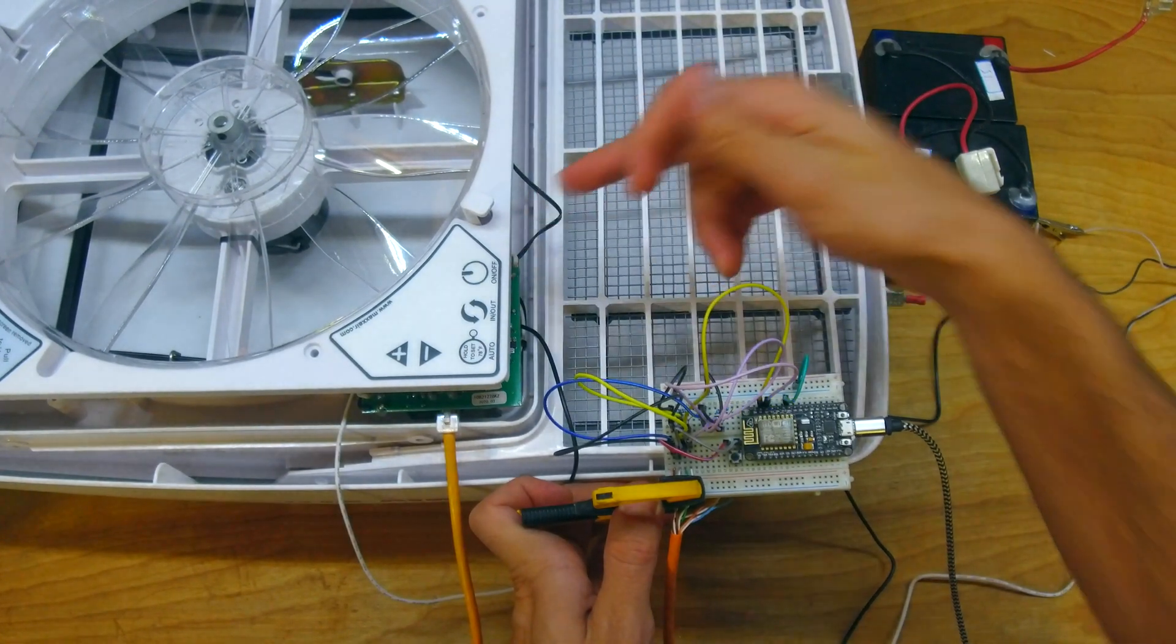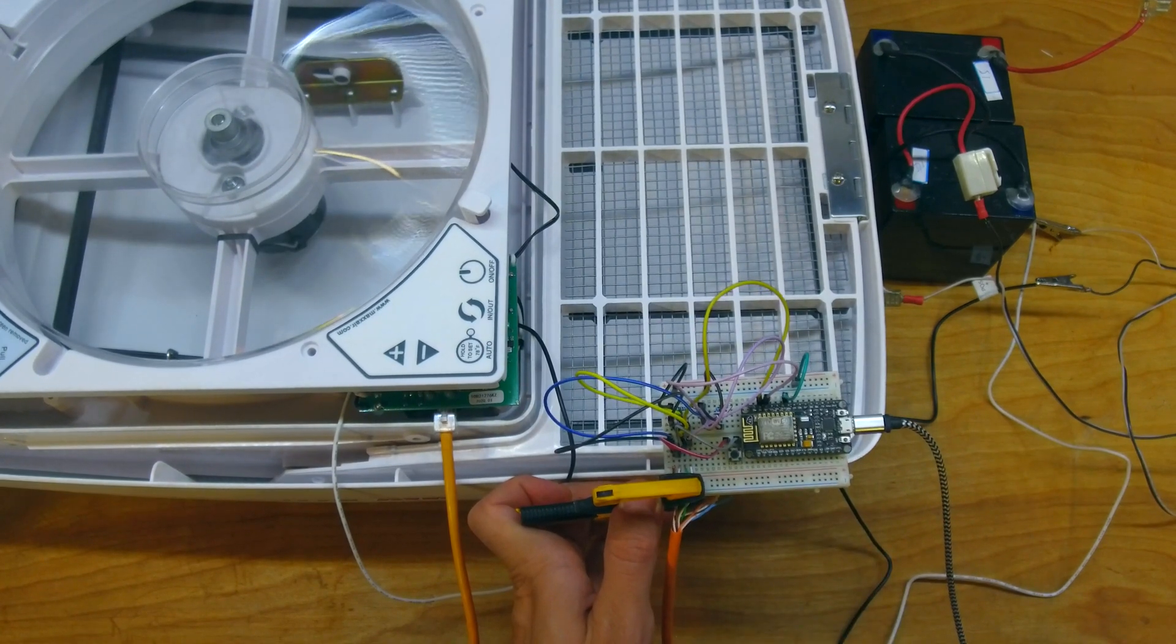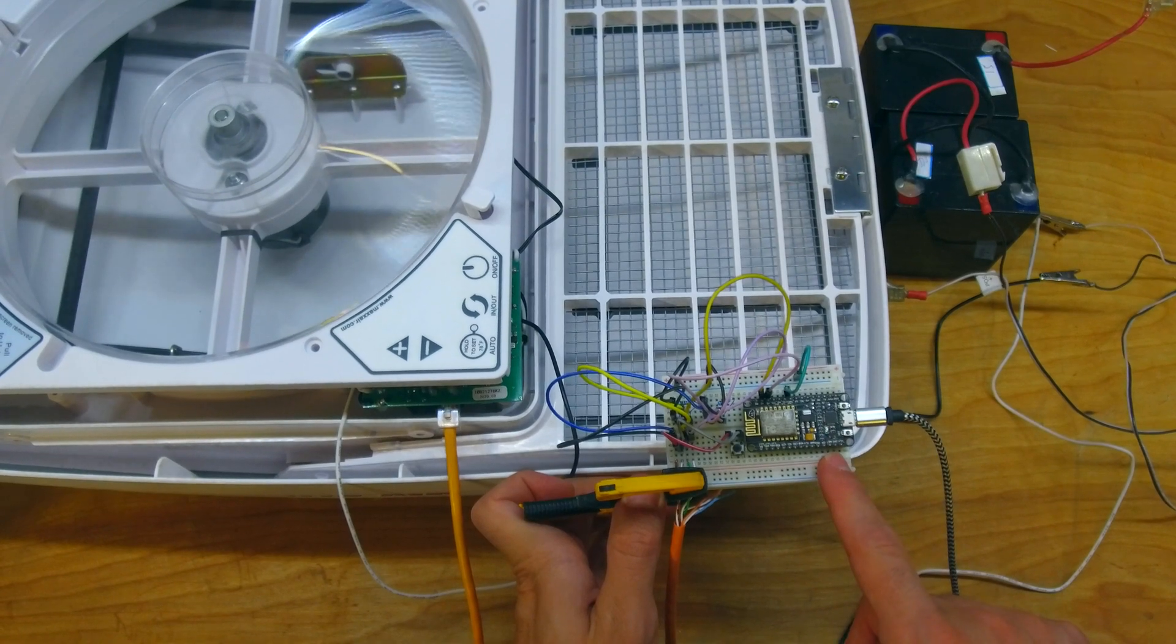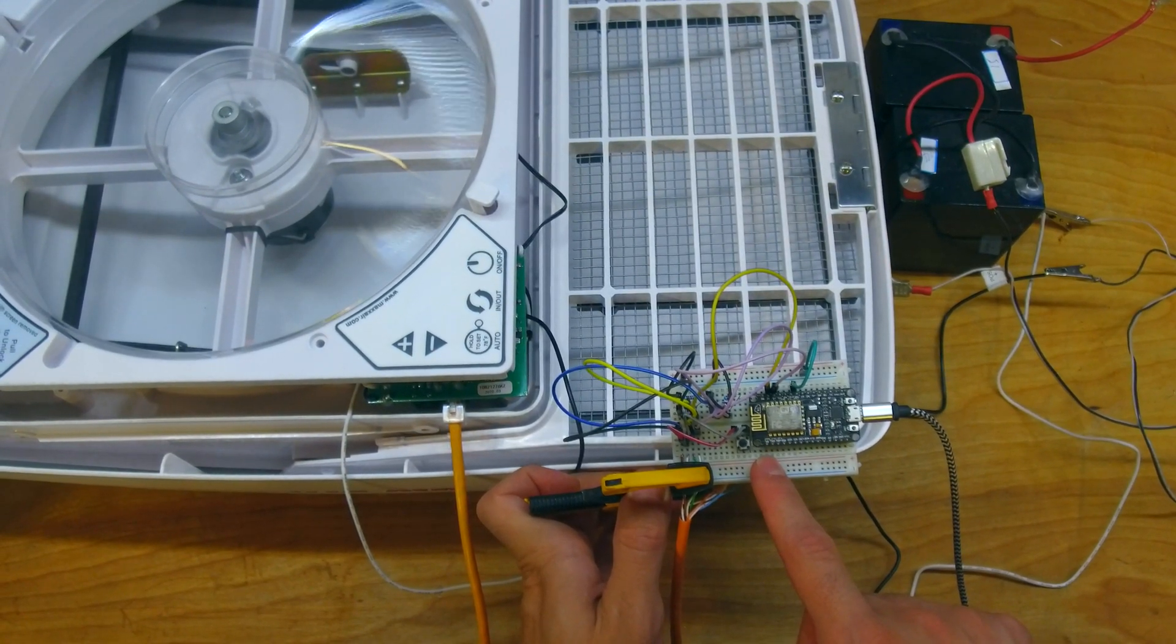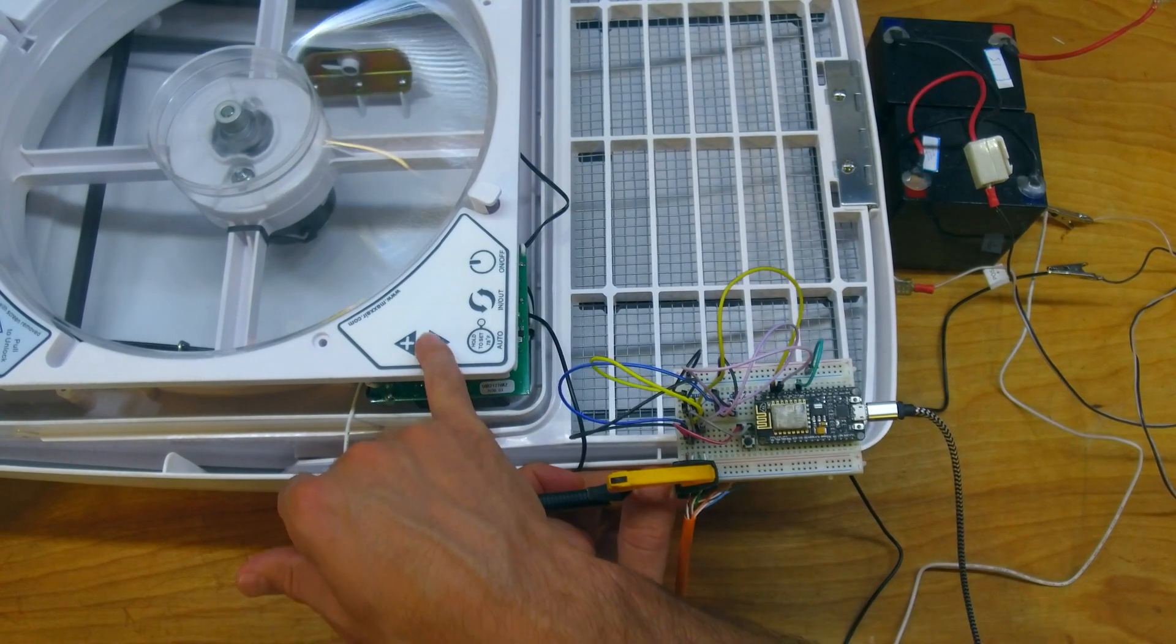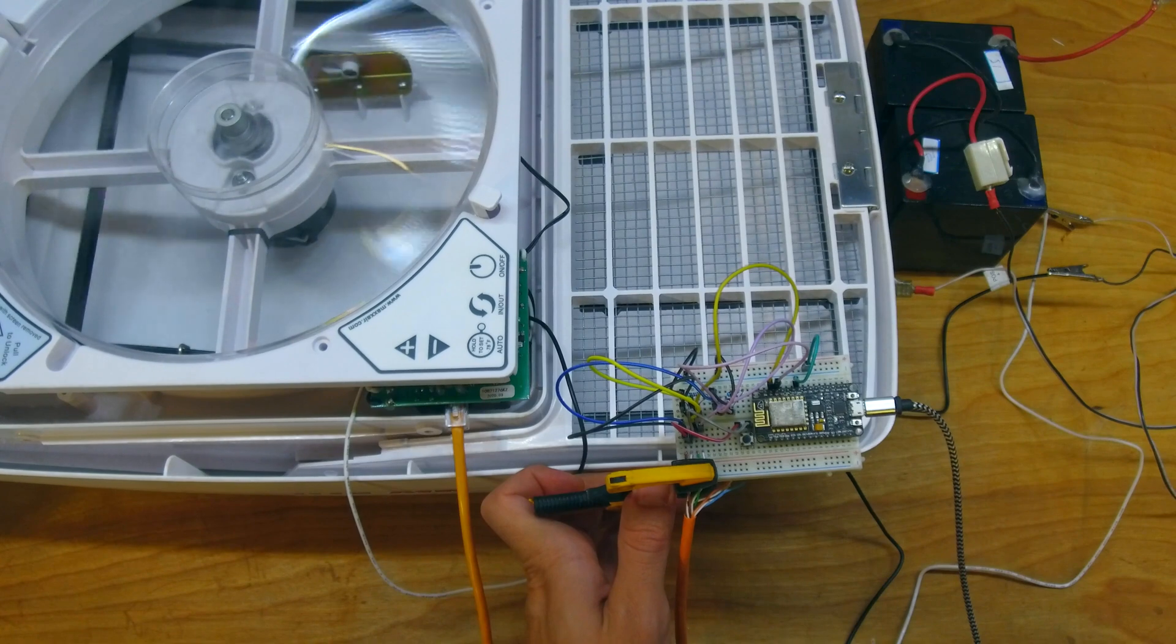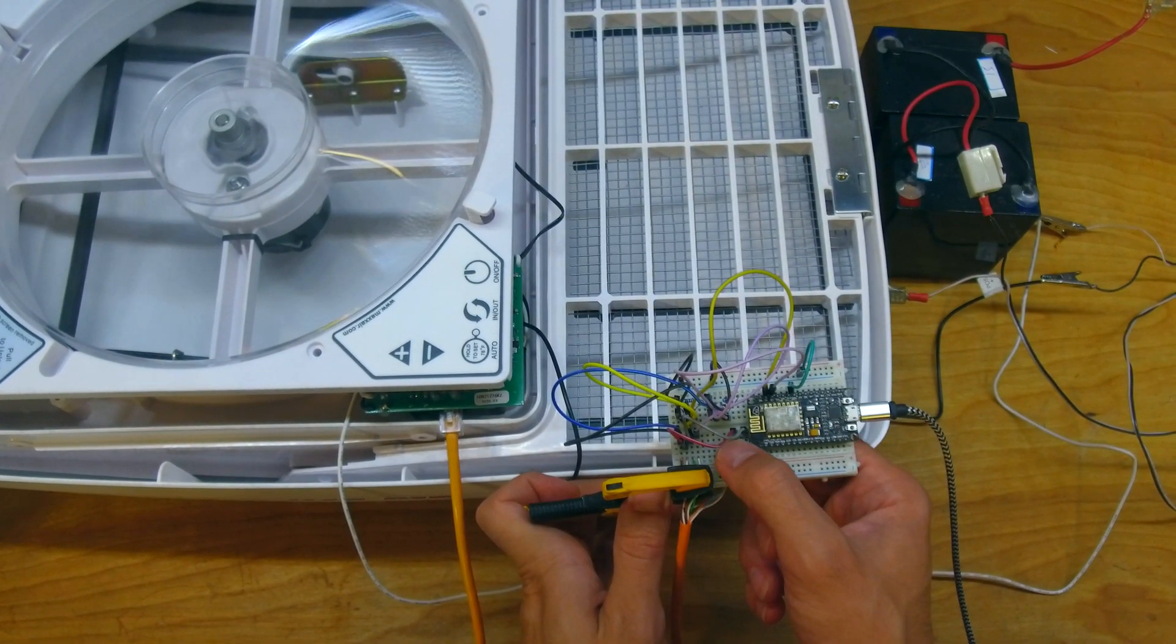I'm going to go ahead and power this on. We get our beep indicating that it's on now. And then I'll press this to turn on the fan. So that's red speeding it up. Now blue is going to slow it down. And these buttons are still functional, of course. And then I'll turn it off.